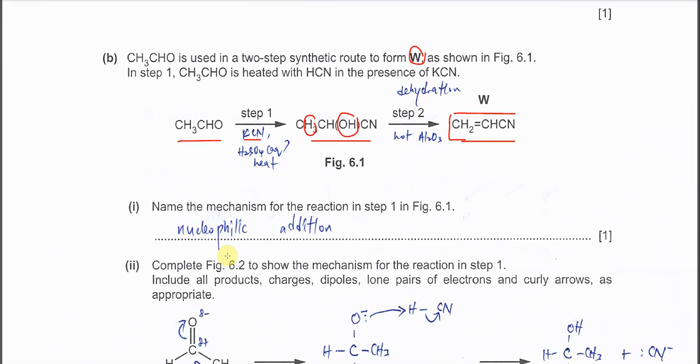Part (i): Name the mechanism for the reaction in step 1. From ethanal to the second compound, HCN is added to the ethanal. This is an addition, and since it's a mechanism, the name is nucleophilic addition because the addition starts with cyanide, which is a nucleophile.